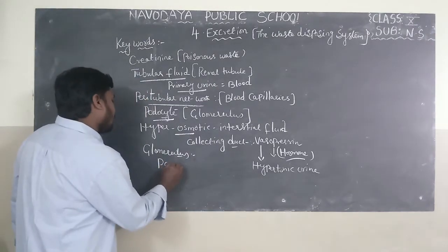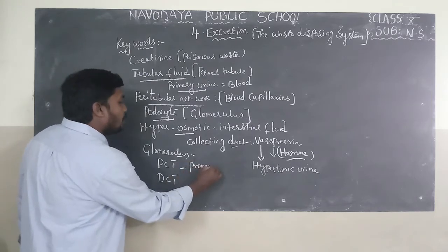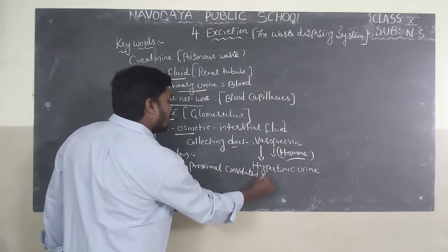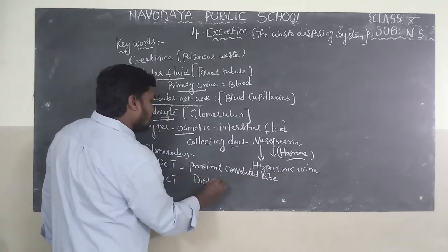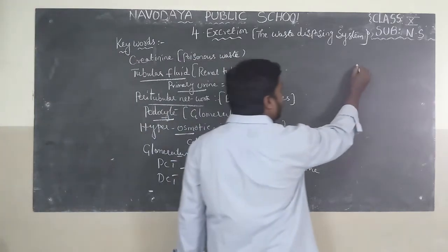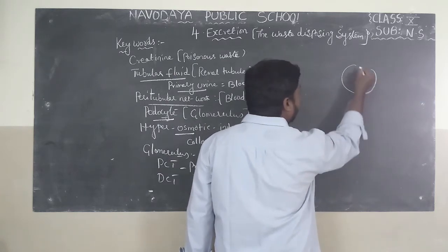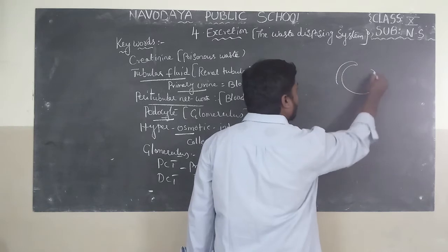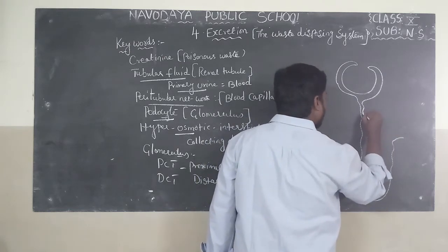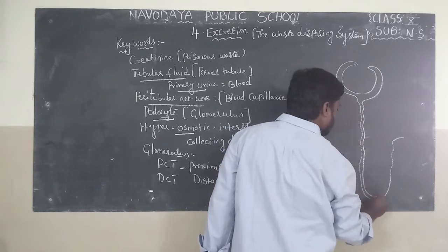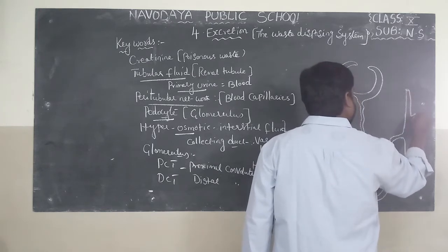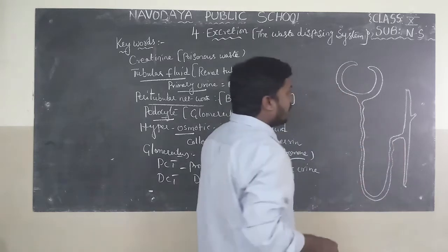Next keywords are PCT and DCT. PCT means proximal convoluted tube, and DCT means distal convoluted tube. If you observe the nephron — I will draw a diagram of the nephron here. This is the nephron.